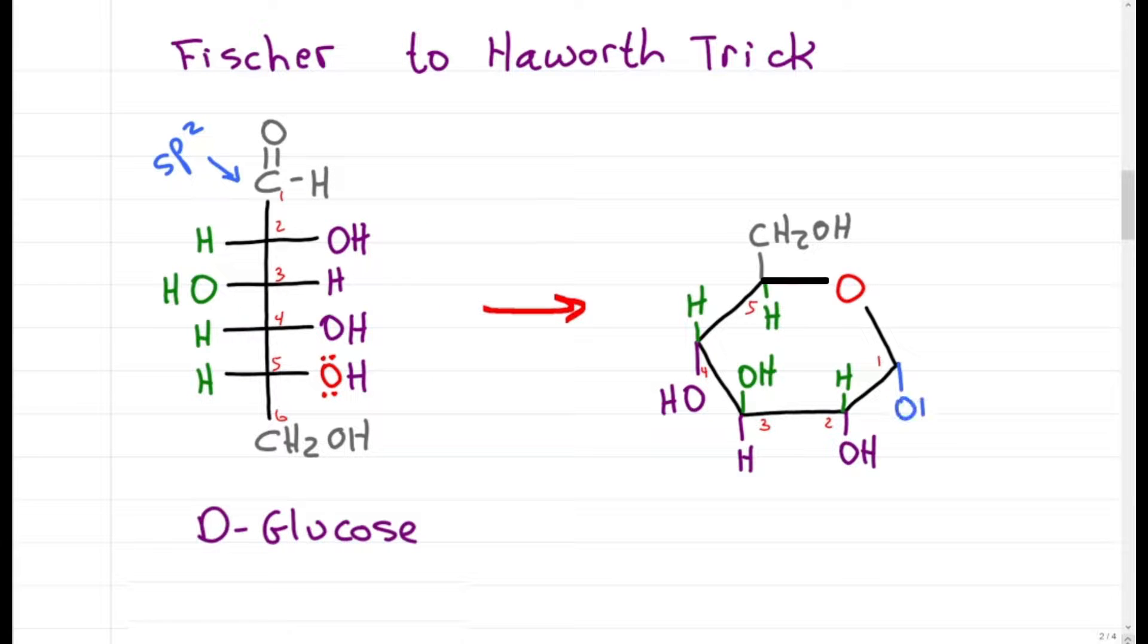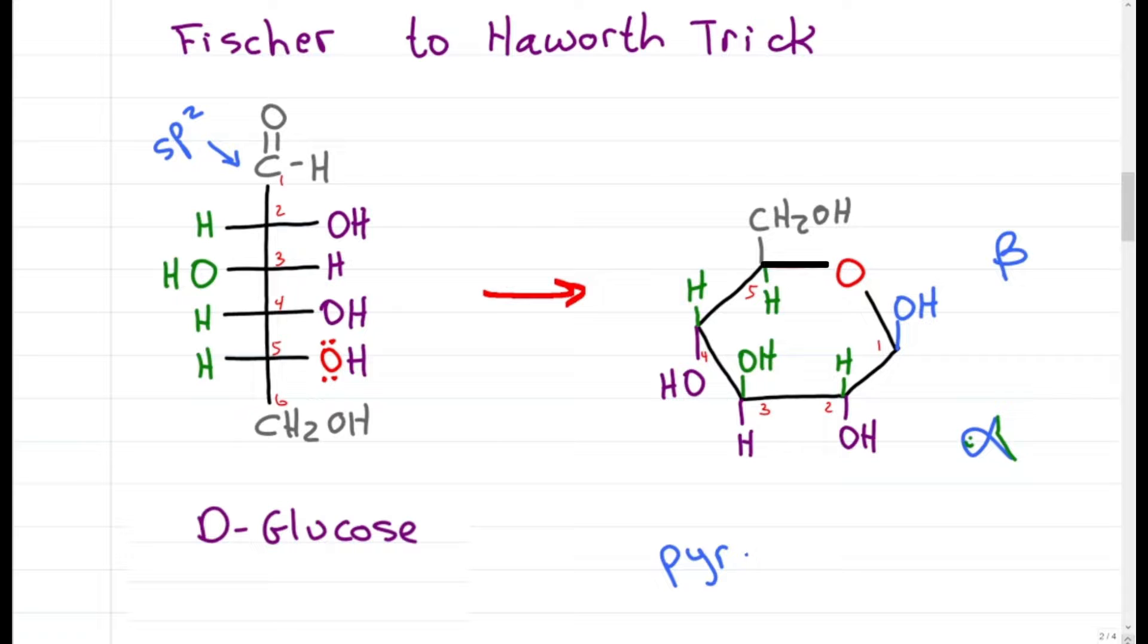If we draw the OH down, we get the alpha product. If we draw it up, we get beta. The way I remember it is alpha reminds me of a fish swimming down in the sea, and beta like a bird, as my toddler says, flying high in the sky. This is a pyranose ring with 6 atoms in the ring.